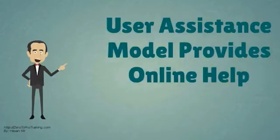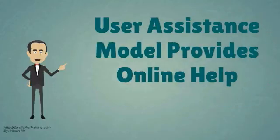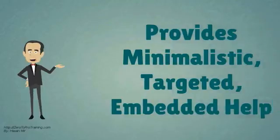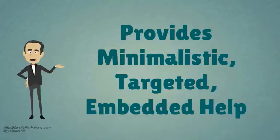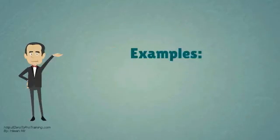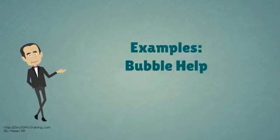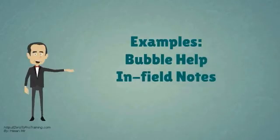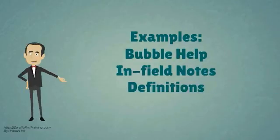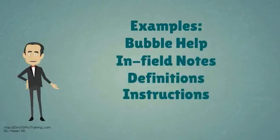The User Assistance Model provides online help to users who need to complete their tasks. It provides minimalistic, targeted, and embedded help. For example, Bubble Help, Field Notes, Definitions, and Instructions.